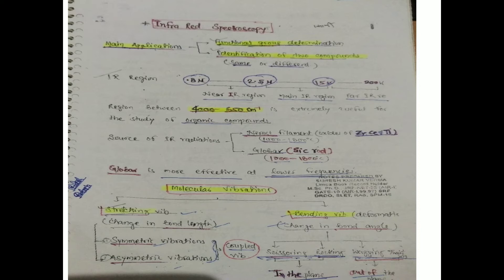Molecular vibrations are of two types: first is stretching vibration and second is bending vibration. In stretching vibration, only the bond length changes; in bending vibration, the bond angle changes. Stretching vibration is further of two types: symmetric vibration and asymmetric vibration, also called coupled vibration.